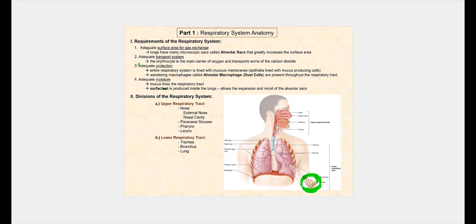The second requirement is an adequate transport system. When we were talking about blood, we learned that oxygen has a very low solubility in water, while water makes up most of the fluid component of blood, which is referred to as plasma. Therefore, oxygen needs a transporter — a carrier — and that of course is your mature red blood cell called the erythrocyte. Within the erythrocyte, we have 250 million hemoglobins that will interact with oxygen to deliver it to the tissue cells.